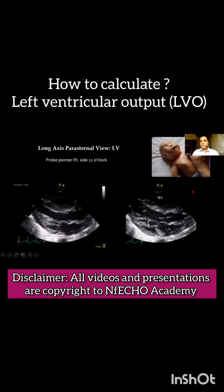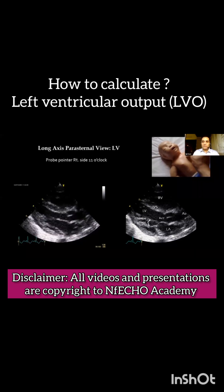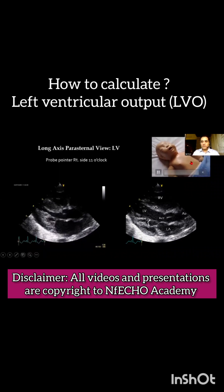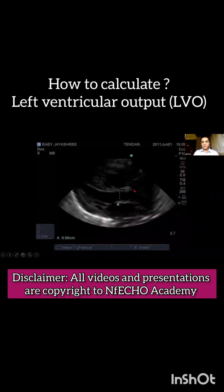This is the parasternal long axis view, used to calculate the diameter and hence the radius of the aorta. The probe is kept at the nipple line, one of the low parasternal views, with the pointer directed toward the right shoulder at the 11 o'clock position and the probe orientation marker upwards. The aorta should appear in the middle of the screen, perpendicular to the direction of the ultrasonic waves. The aortic diameter is measured at the level where the aortic valve cusps are hinged, from inner wall to inner wall using calipers. Half of this gives the aortic radius.